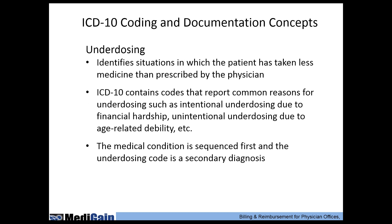Another new concept in ICD-10 is underdosing — identifying situations where a patient is not taking medication as prescribed. You might have codes designating if a patient's not taking medication because of financial hardship or other reasons. This becomes important in population management. For example, an atrial fibrillation patient not taking their anticoagulation medicine is at much higher stroke risk, so we want to identify that and intervene to prevent adverse events.